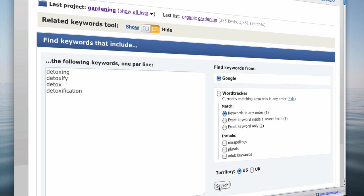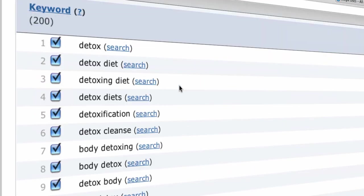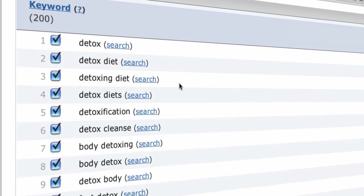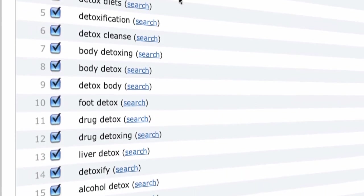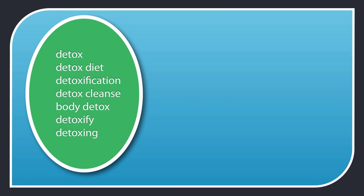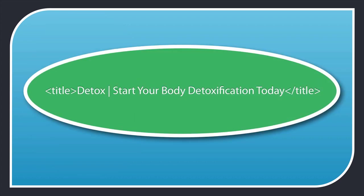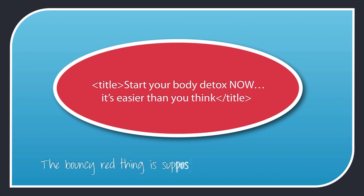Let's put in some detox variations: detoxing, detoxify, detox, and detoxification. A quick search reveals the top keywords include detox, detox diet, detoxification, detox cleanse, body detox, detoxify, and detoxing. So detox is the most searched-for variation, followed by detoxification. I'll rewrite the title tag to put the primary keyword up front and take advantage of the extra traffic for the word detox. I've selected detox as the primary keyword and detoxification as the secondary keyword. Notice that I haven't gone for a loose title — that would be optimizing for 'start your body' and we're trying to get ranked for detox and detoxification.